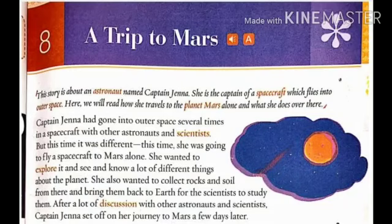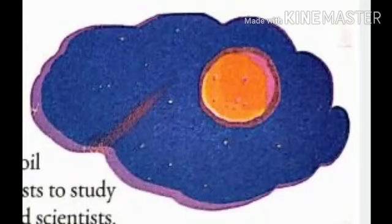Several times Captain Gina had gone along with other astronauts and scientists, but this time it was different — she was going to travel to Mars all alone, with nobody to accompany her. She wanted to explore different things about the planet and collect different kinds of rocks and soil to bring back to Earth for other scientists to study about planet Mars. After a lot of discussion, she started the journey to planet Mars.